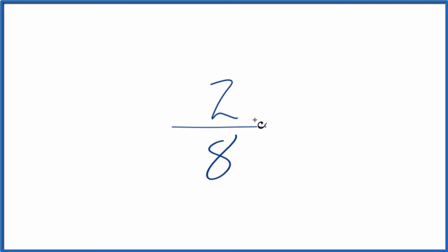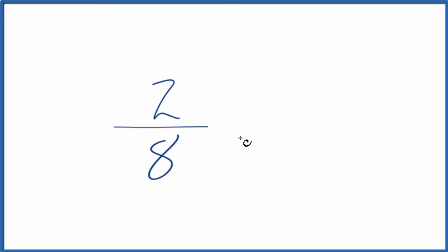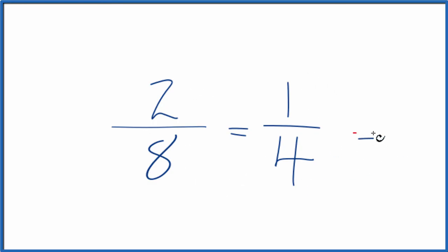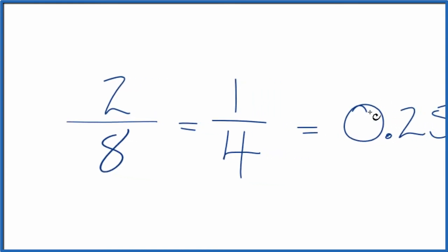First, we can simplify 2/8. 2 goes into 2 one time, and 2 goes into 8 four times. So 1/4 and 2/8 are equivalent fractions. If you divide 2 by 8 or 1 by 4, you get the same thing — 0.25 — because they're equivalent.